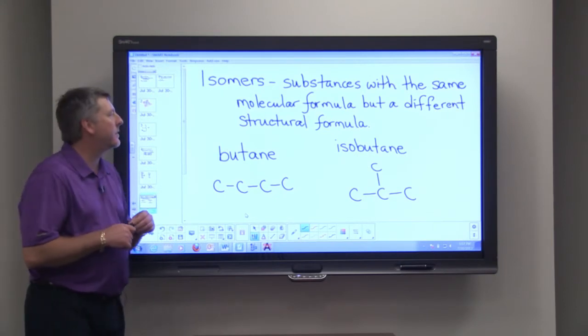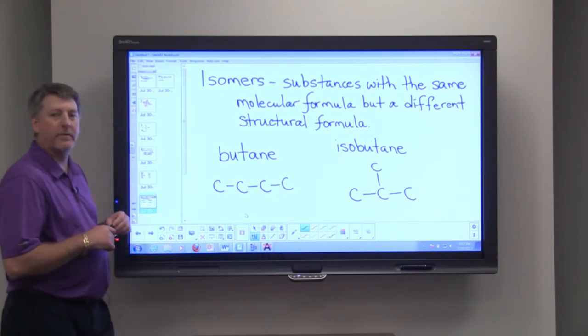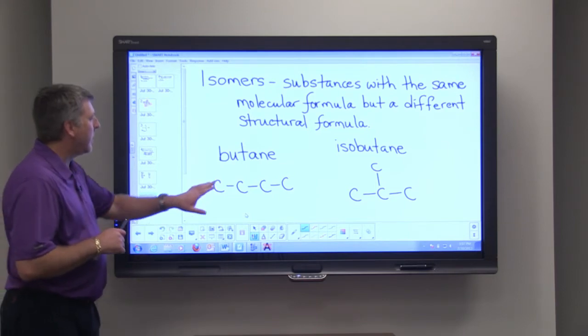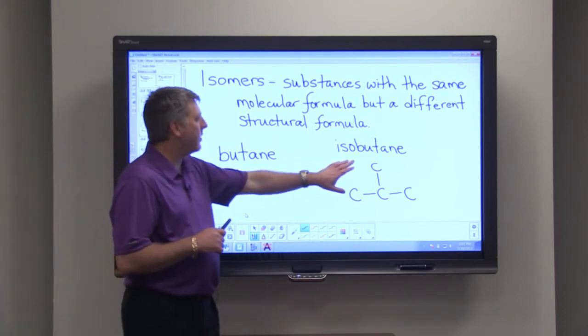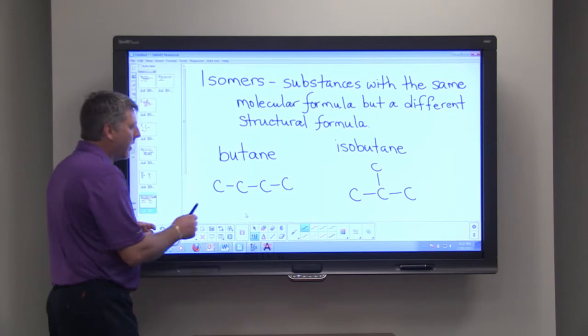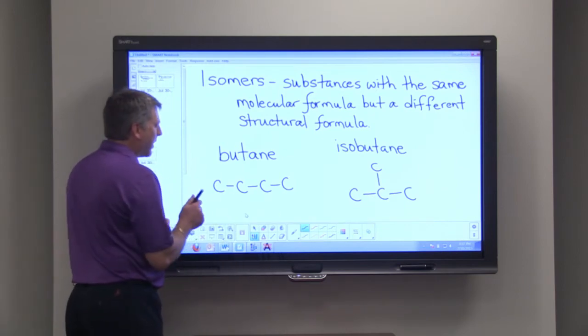Isomers are substances with the same molecular formula but different structural formulas. I've drawn butane and isobutane on the board here, and notice I've just shown the carbons.